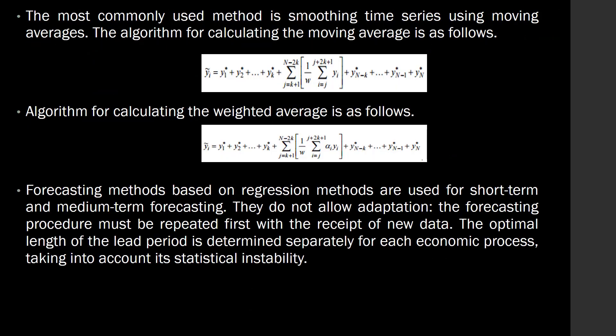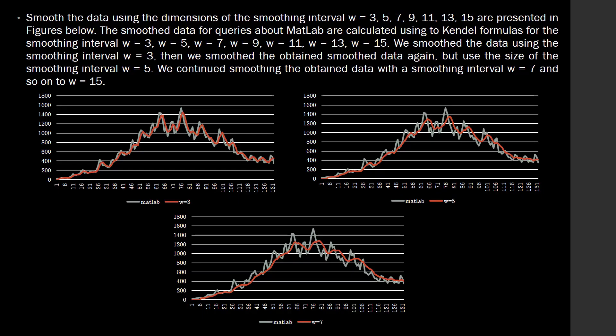The most commonly used method is smoothing time series using moving averages. The algorithm for calculating the moving average is as follows, as is the algorithm for calculating the weighted average. Forecasting methods based on regression are used for short-term and medium-term forecasting; they do not allow adaptation, and the forecasting procedure must be repeated with the receipt of new data. The optimal length of the lead period is determined separately for each economic process, taking into account statistical instability. The smooth data for queries about MATLAB are calculated using two formulas for the smoothing interval, with w equals 3, then 5, then 7, and so on up to 15.